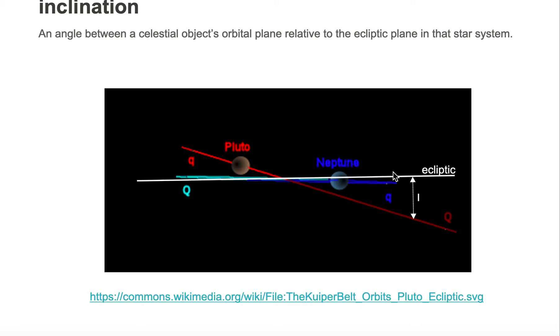As you can see, relative to the plane of the ecliptic, which is the plane that the Sun and the Earth orbit in, we see the inclination angle, which is labeled i here.